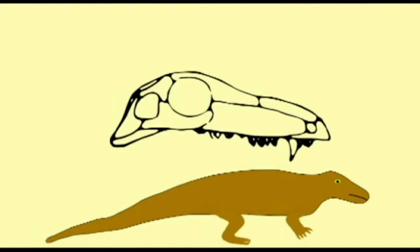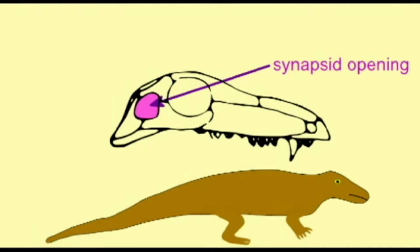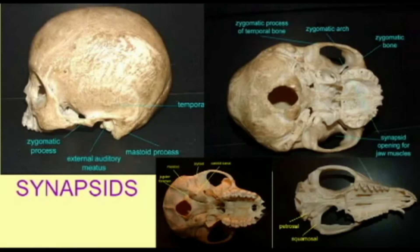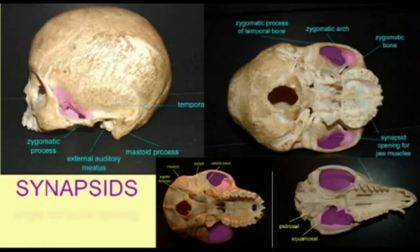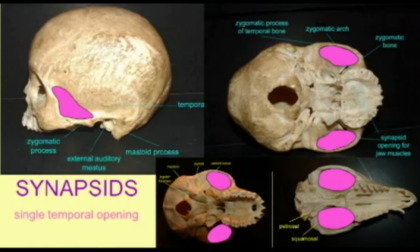The ancestors of mammals and mammals themselves are defined as synapsids. They possess the synapsid opening, which is bordered by the zygomatic bone and the zygomatic process of the temporal bone. The synapsid group, which includes mammals and their reptilian ancestors, are defined by this opening.